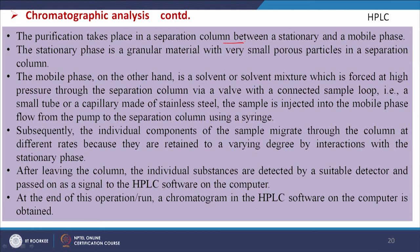The purification takes place in a separation column between a stationary and a mobile phase. The stationary phase is a granular material with very small porous particles. The mobile phase is a solvent or solvent mixture forced at high pressure through the separation column via a valve with a connected sample loop of stainless steel capillary. The sample is injected into the mobile phase flow using a syringe. Individual components migrate through the column at different rates due to varying interactions with the stationary phase and are detected by a suitable detector, passed as a signal to the HPLC software.